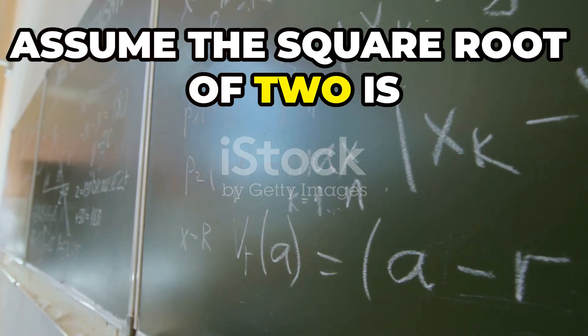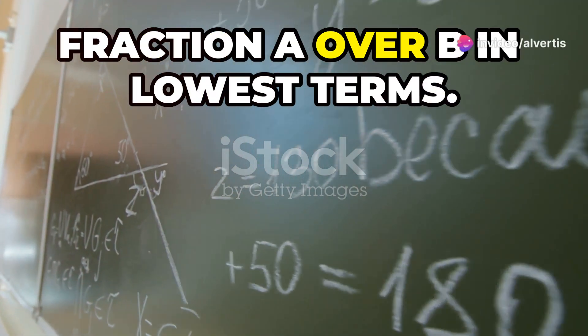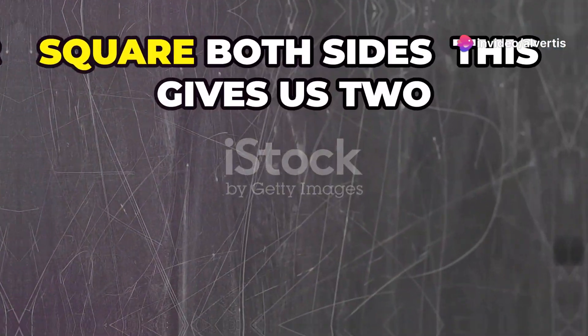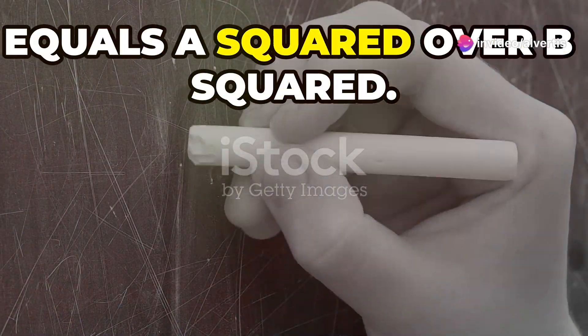Assume the square root of 2 is rational. This means we can write it as a fraction a over b in lowest terms. Square both sides. This gives us 2 equals a squared over b squared.